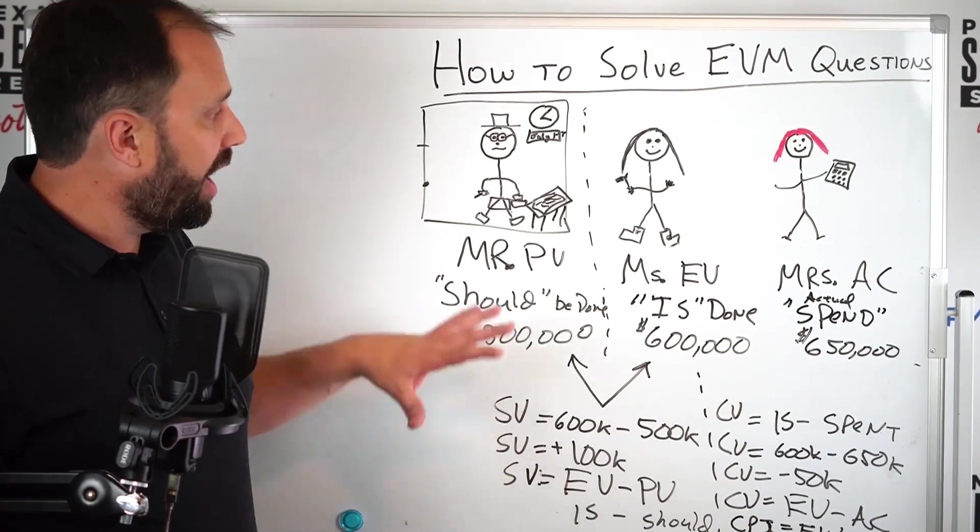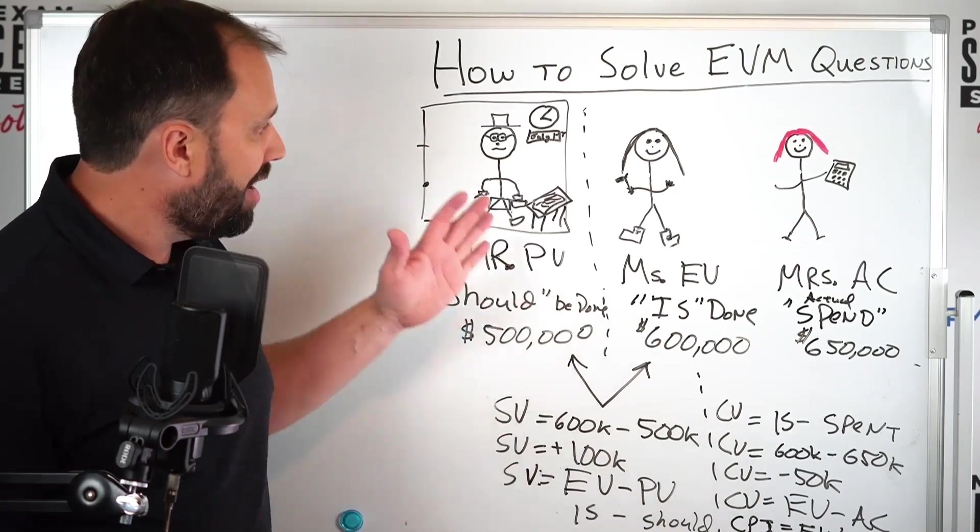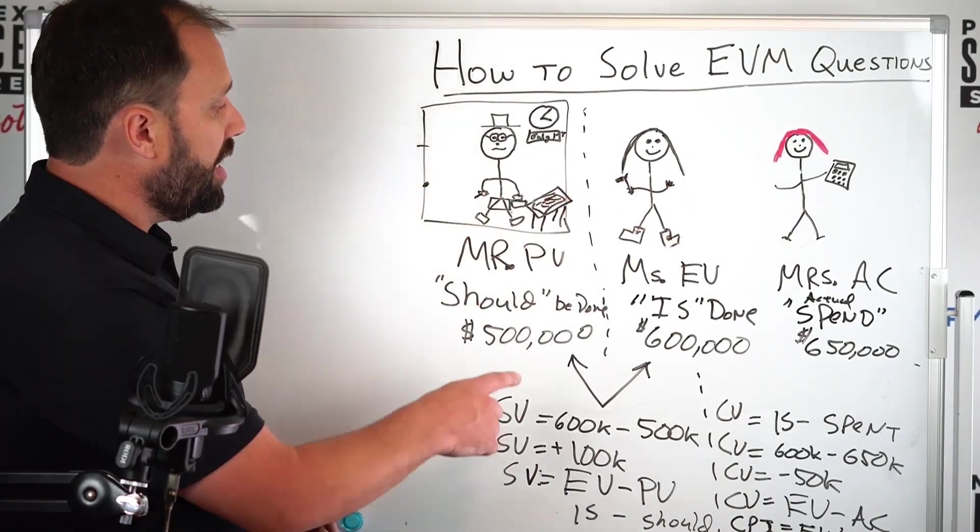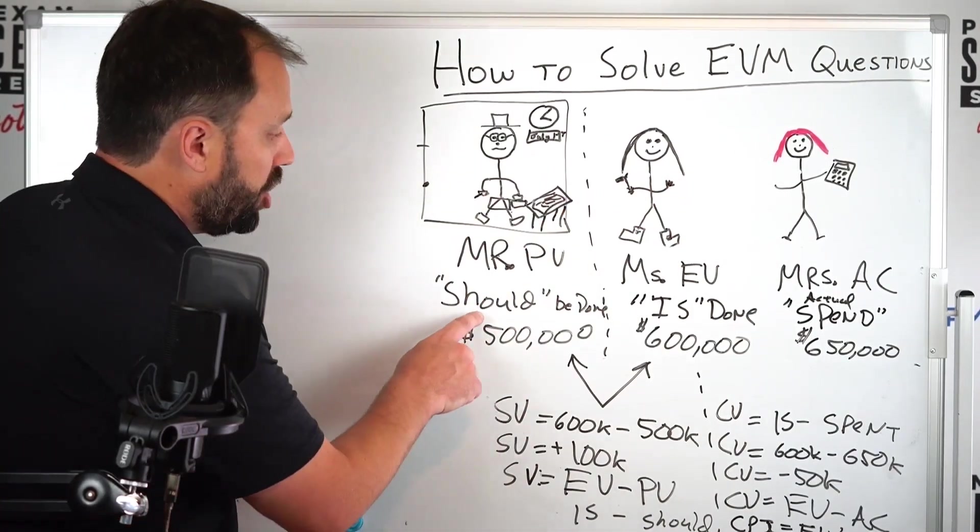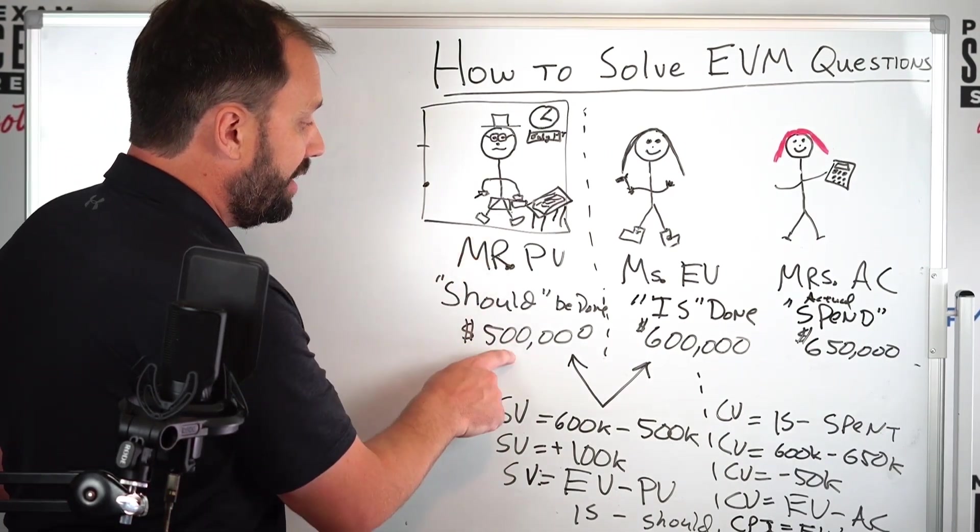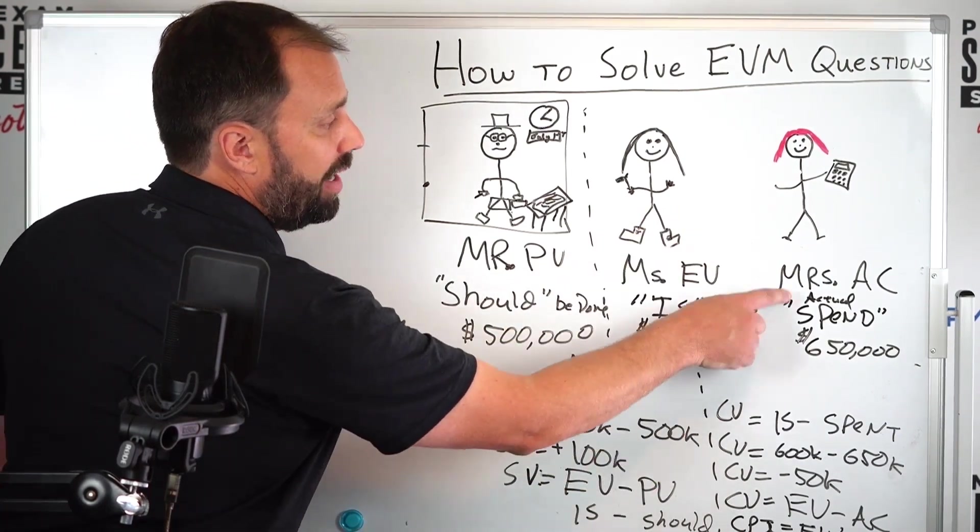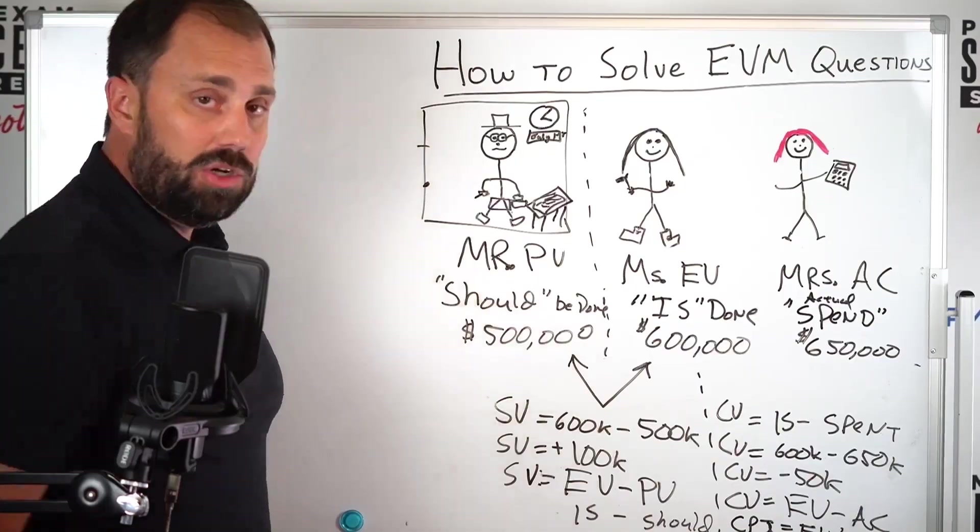Think through your life, do problems, and then as you're reading the EVM questions, visualize. Say when you see - you'll look for the words 'should be done.' Oh, that's PV, see him. Get the value, 'is done' - that's her. Get the value, 'spend' - you know that one, that's just numbers. And then you go through it, you can solve them.